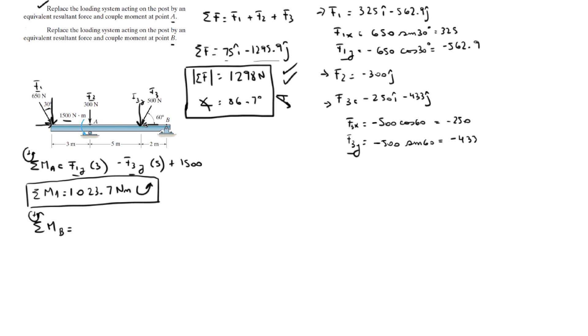Now the sum of the moments about B are created by F1y, F2y, F3y, not by the x's because they're going towards B and away from B, and this 1500 Nm moment. Therefore the sum of the moments about B comes out to be F1y times 10 plus F2y times 7 plus F3y times 2 plus 1500, and this comes out to be 10,095 newton meters.